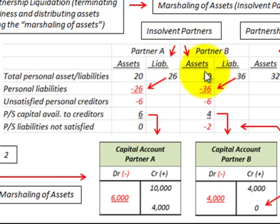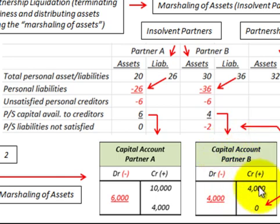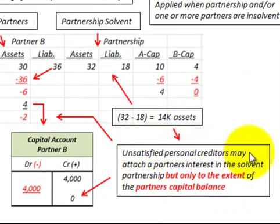Now let's look at Partner B. They have assets of $30,000 and liabilities of $36,000, so we have unsatisfied personal creditors of $6,000. Applying the marshalling of assets doctrine, the unsatisfied personal creditors may attach to the partner's interest in the solvent partnership, but only to the extent of the partner's capital balance.